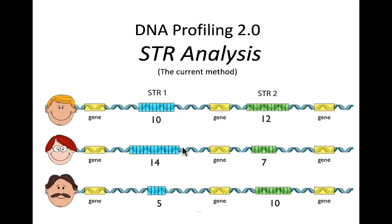Hello and welcome to our final notes on our serology unit. Today we'll be talking about DNA profiling 2.0. This is the current method for DNA profiling that forensic science uses. It's been around for around 15 years and it is the standard by which every single lab in the world tests DNA currently. They can still use RFLP if they would like to, but this method is quicker and cheaper and most experts will tell you that it's as reliable as RFLP.